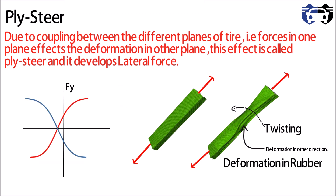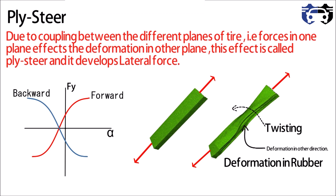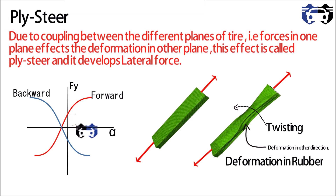When the tire rolls on the road, stretching in the x-axis produces forward traction force, in the z-axis it produces the support force, and in the y-axis the stretching produces a lateral force. In ply steer, the curve between lateral force and slip angle shows that forward and backward forces are opposite in direction — F1 ply steer for forward and F2 ply steer for backward. The direction of lateral force changes when tire rotation changes.